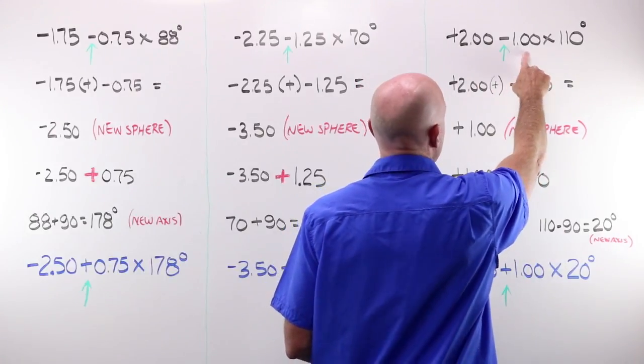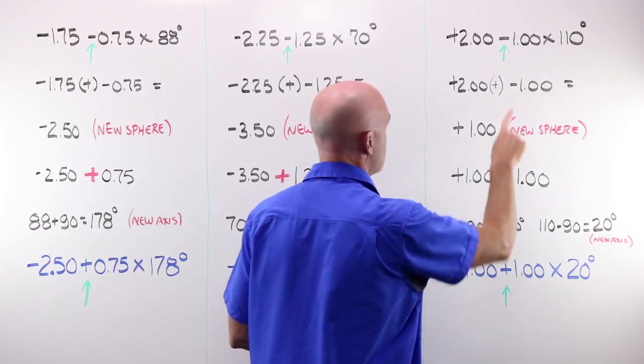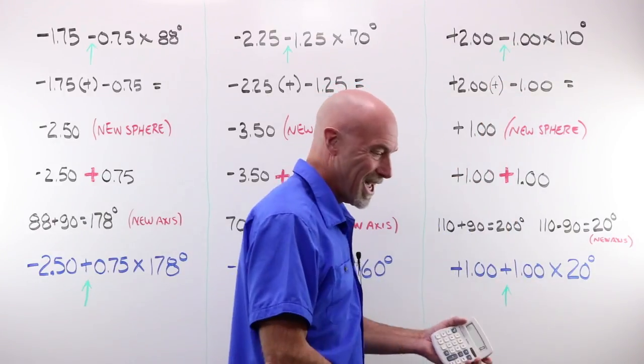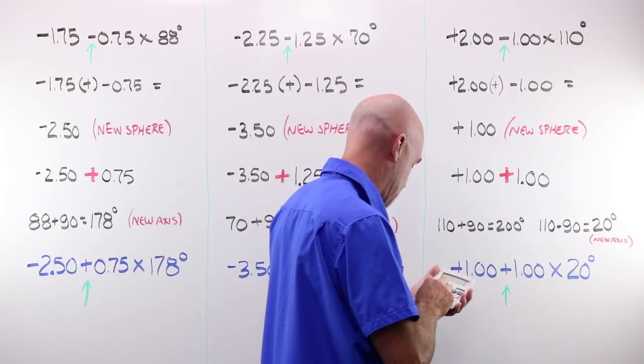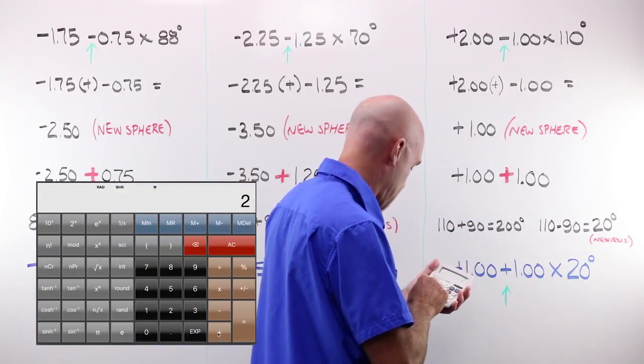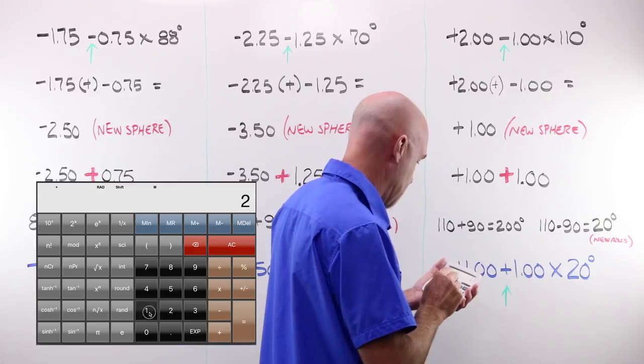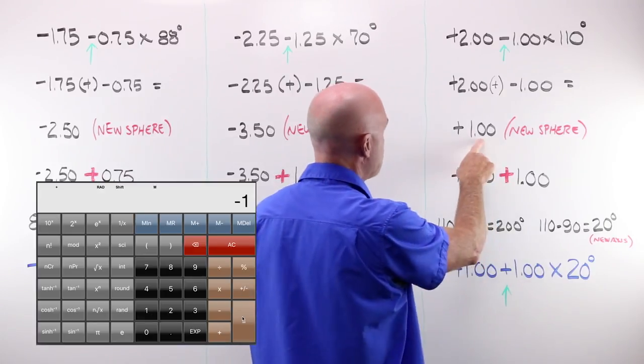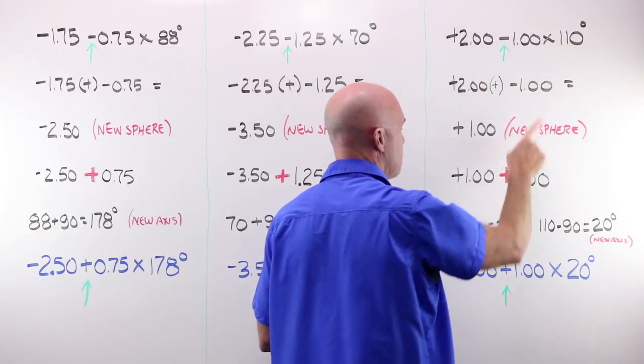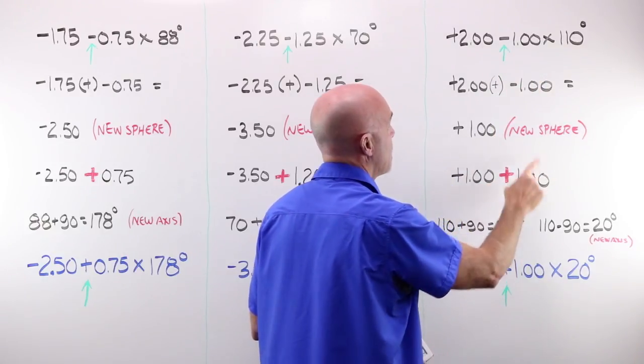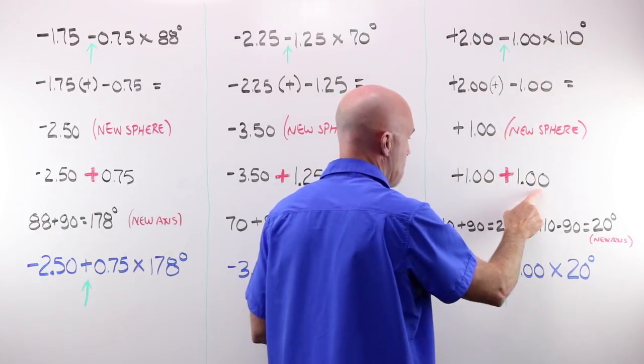To go from my plus 2.00 minus 1.00 to the same exact lens order written in plus cylinder form, I'm going to take my 2.00. I'm going to add 1.00 minus 1.00, and I end up at plus 1.00. This is my new sphere. I take my cylinder value, keep it exactly the same, and change my minus to a plus.